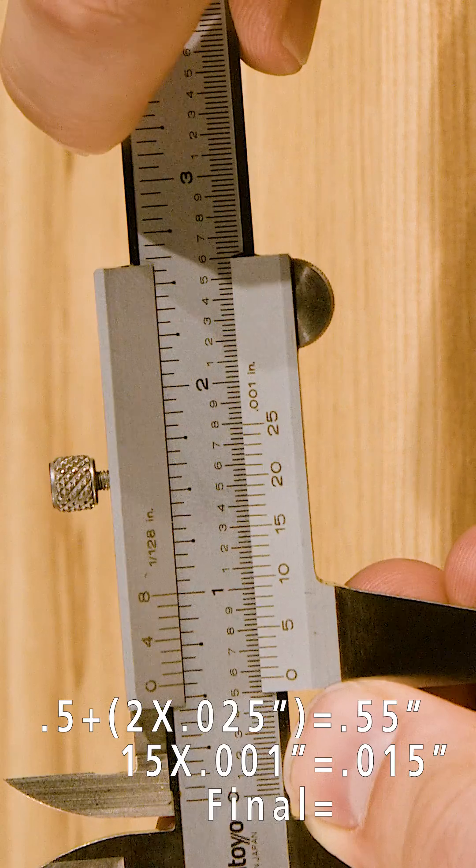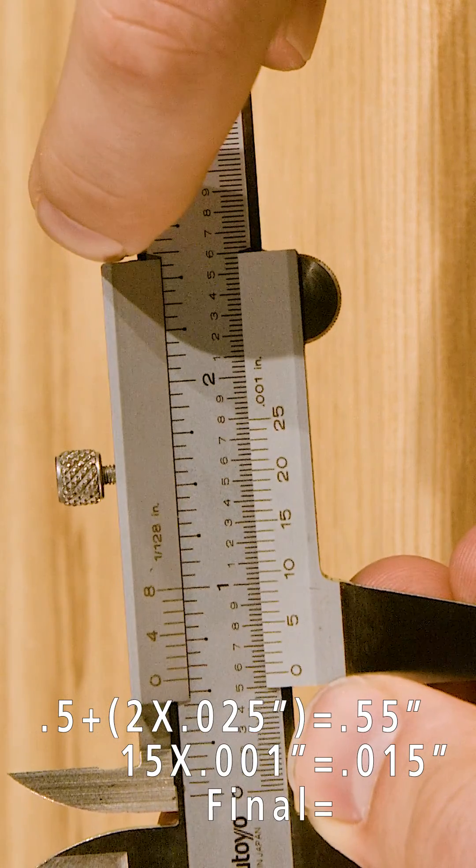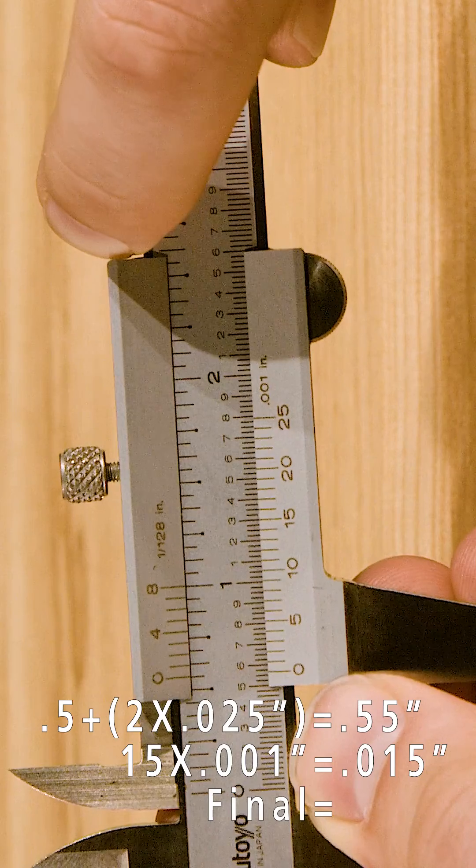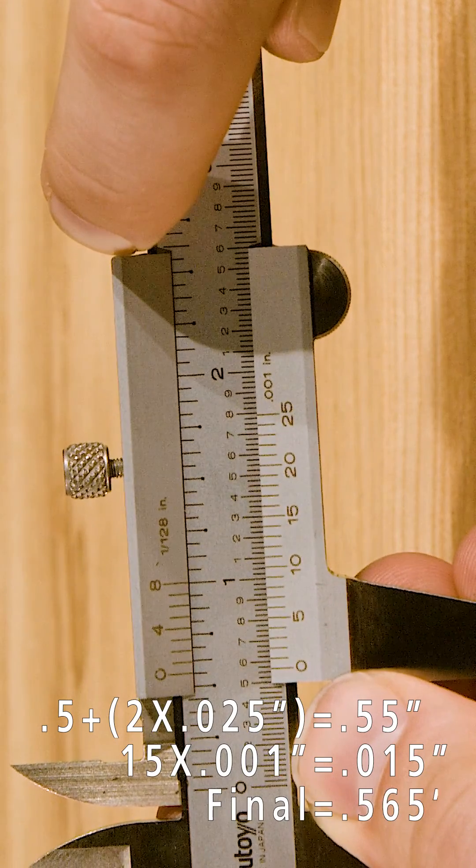The final reading is the sum of these two readings, so that's .550 inches and .015 inches, for a final reading of .565 inches.